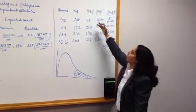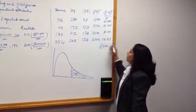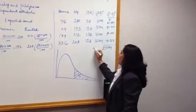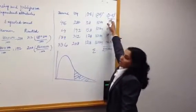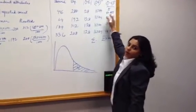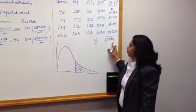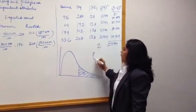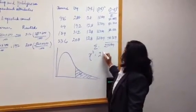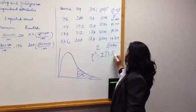We get the sum of observed minus expected square divided by expected which will be equal to 273.504. Our chi-squared calculated will be equal to 273.504.